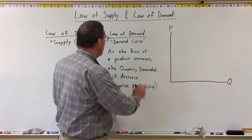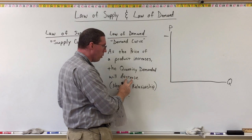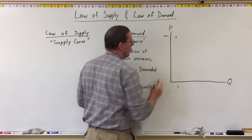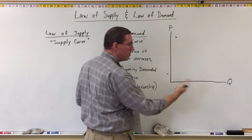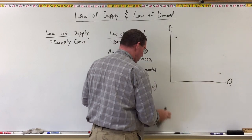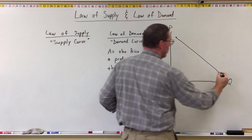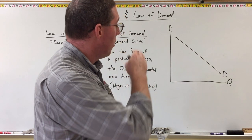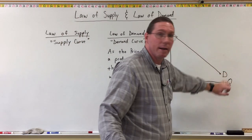When price is high, quantity demanded will be lower — quantity is down. When price is lower, quantity would be higher, putting a point over there. Connecting these two dots gives us a downward sloping line, which is basically what a demand curve looks like. We label that downward sloping line with the letter D to indicate the demand curve.